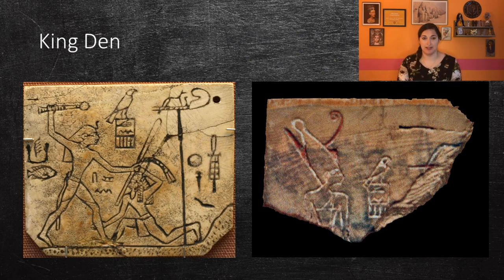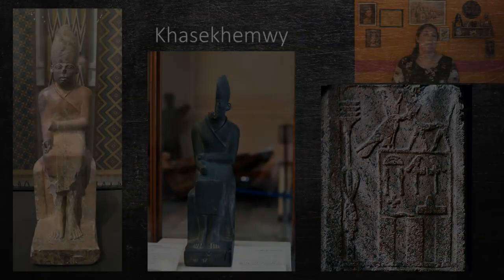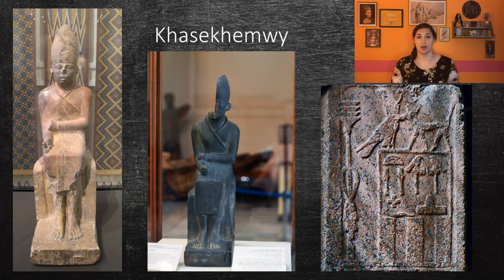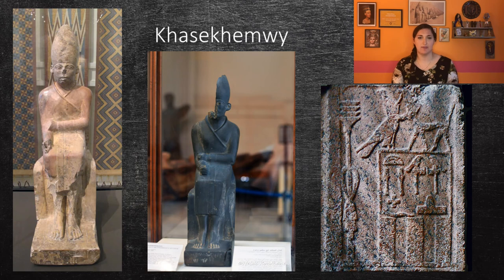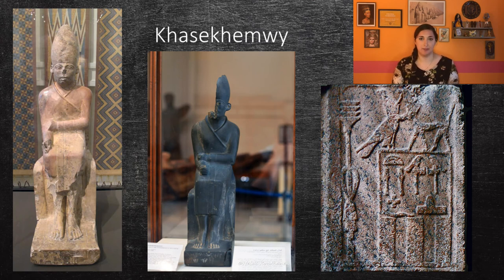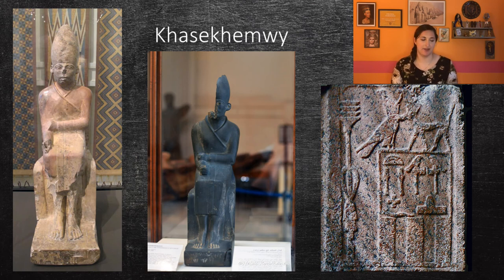Others have speculated that these crowns were passed from ruler to ruler, meaning only a couple existed at the same time. Many rulers of the Second Dynasty are not very well known. The final king of the Second Dynasty, called Khasekhemwy, is mostly well known because of two statues of himself. During his reign, he likely had several successful military campaigns and multiple building projects in El Kab, Hierakonpolis, and Abydos.